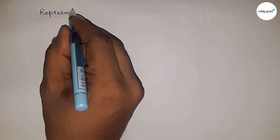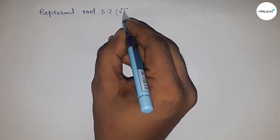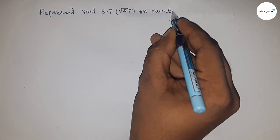Hi everyone, welcome to Accessory Classes. Today we're talking about the representation of root 5.7 on a number line.